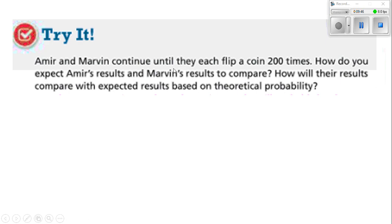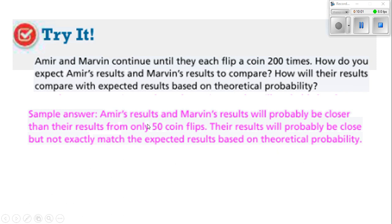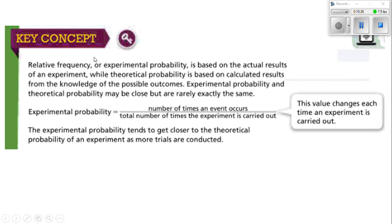If Amir and Marvin each continue until they flip the coin 200 times, their results will probably be closer to each other and closer to the theoretical probability than their results from only 50 coin flips. The greater the number of times we conduct our experiments, the closer our numbers should be to the theoretical probability. Relative frequency or experimental probability is based on the actual results of an experiment, while theoretical probability is based on calculated results from knowledge of possible outcomes.